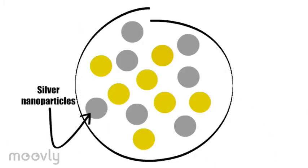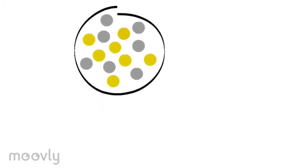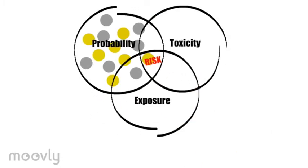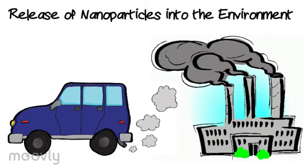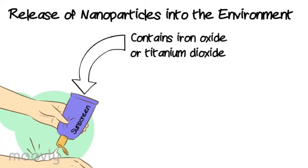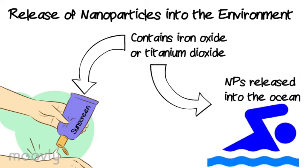The large output of nanoparticles has encouraged environmentalists to evaluate the risks imposed by their exposure. Nanoparticles can be released by natural causes or by emissions produced by traffic or factories. In some cases, preventing the release of nanoparticles into the environment is improbable altogether, like when iron oxide is released into the ocean through sunscreen.